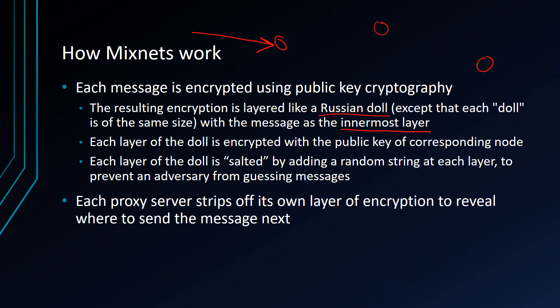As a mix receives a packet, it strips off its own layer of encryption using its private key. This reveals where to send the message next, and then it sends the message out when it's time. Then the next node does the same thing — it uses its own private key to decrypt its layer of the doll, and after an appropriate amount of time it sends the packet onward.